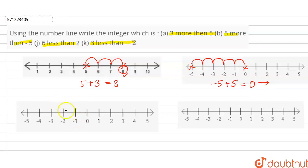Third part is, part C is 6 less than 2. 6 less than 2 means this is 2, and 6 less, so we have to transfer to the left hand side by 6 places. So 1, 2, 3, 4, 5, 6. So our integer is minus 4. We can verify this, so 2 minus 6, so 2 minus 6 is minus 4.